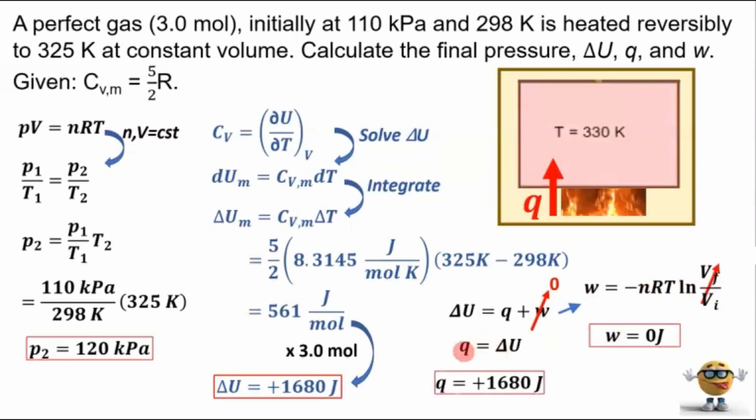So the energy transferred as heat equals the change in internal energy. So the energy transferred as heat equals plus 1,680 joules. So the system gains 1,680 joules of energy.